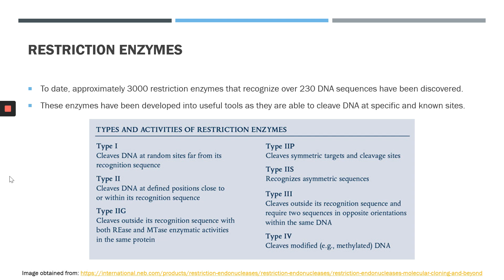To date, approximately 3,000 restriction enzymes have been discovered, and these recognize more than 230 DNA sequences. These enzymes have been developed into useful tools because they cleave DNA at specific and known sites. The type 2 restriction enzymes are of most interest because they cleave at defined positions very close to or within the recognition sequence. Type 1 restriction enzymes cleave at random sites approximately 1,000 base pairs away from the recognition sequence. Type 3 restriction enzymes cleave outside the recognition sequence and require two sequences in opposite orientations within the same DNA strand.